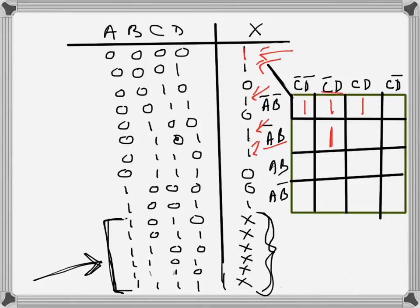Finally, I have the last one which is 1001, so that's here. These are my ones in the K-map. Now there are the don't care ones, there are six of them. These are 10, 11, 12, 13.